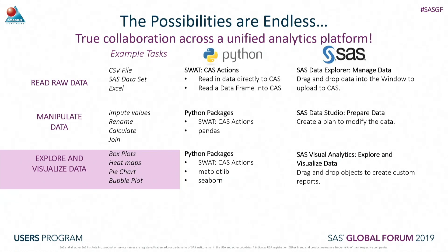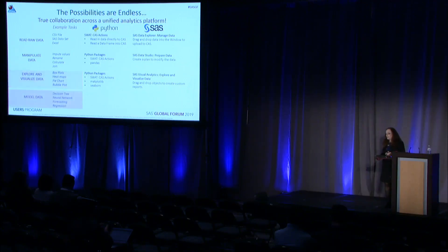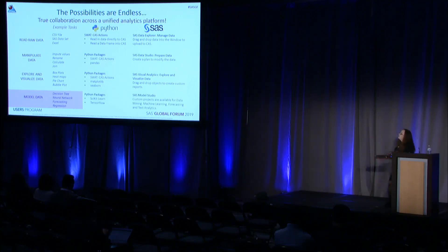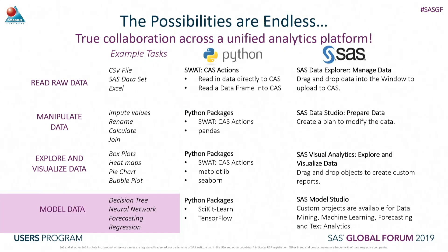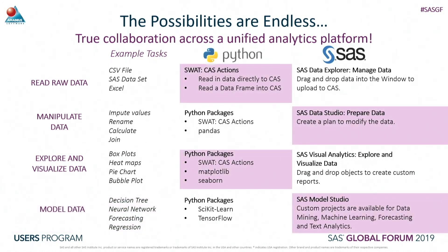There are other packages for visualization such as Seaborn available within Python. Something not covered in this presentation is modeling the data - you can create decision trees, neural networks, forecasting, and regression. Within Python, packages like scikit-learn and TensorFlow are available. We could also switch over to Model Studio and use the custom projects available there. You don't have to work in these side by side - you can switch across at any point. There's no reason why you can't start reading data in Python, switch to SAS Data Studio to prepare it, then switch back again. It is true collaboration across the platform.